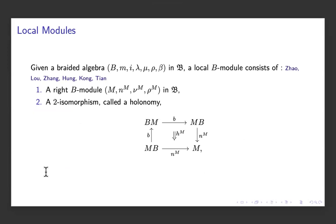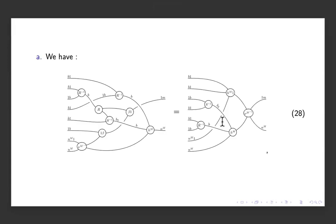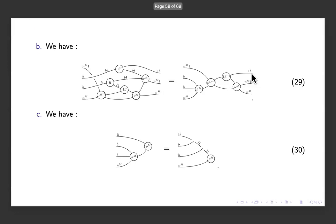Let me define local modules. Local modules are defined over braided algebras. Given a braided algebra B and a right module M over it, I need a piece of data called holonomy. The holonomy goes as follows: I first exchange M and B and exchange again — a double braiding — then apply the B-action; this should equal applying the B-action directly. This data is required to satisfy three coherence conditions. We also define local module one-morphisms and local module two-morphisms.